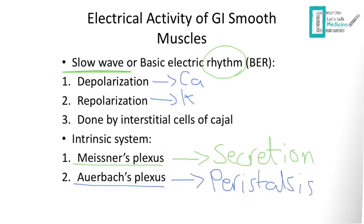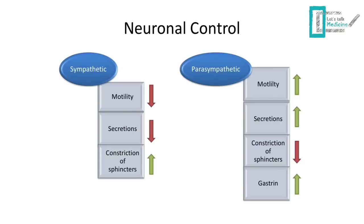Now, jumping to the extrinsic system, we have sympathetic and parasympathetic. When the sympathetic system is activated, we have decreased motility, decreased secretions, and increased constriction of sphincters — basically, when we're in fight-or-flight mode, there's no digestion going on. As for the parasympathetic system, we have increased motility and increased secretions through acetylcholine. The parasympathetic system also affects the two plexuses: the Meissner plexus giving us secretions, and the Auerbach's plexus giving us motility.